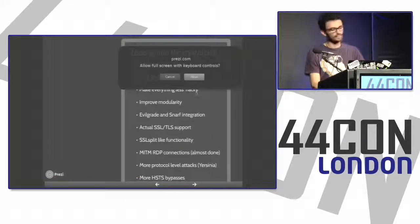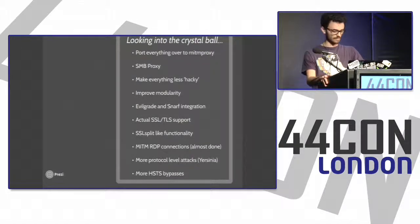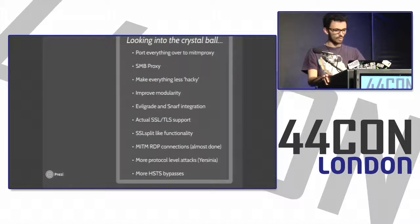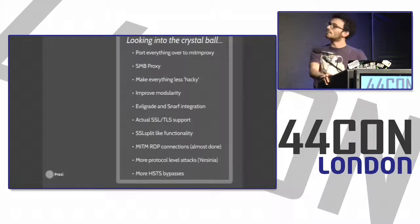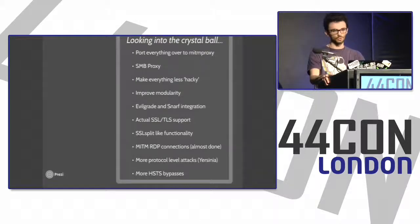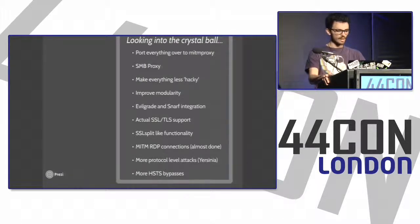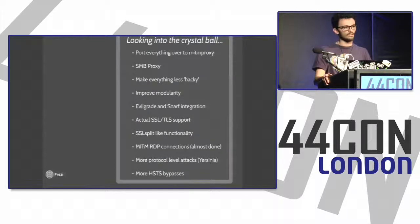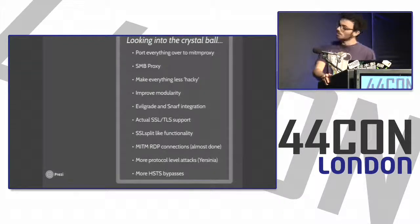In conclusion, it's all on GitHub — just Google MITMF, it's the first result. Future features I plan to implement: migrate everything to mitmproxy for SSL/TLS support, interception support, and HTTP2 support out of the box; implement an SMB proxy so instead of just responding to SMB queries we can actually proxy SMB — for example, rewriting executables going over SMB; make everything less hacky and improve the API and modularity; add EvilGrade and Startup integration, which hijacks software updates.